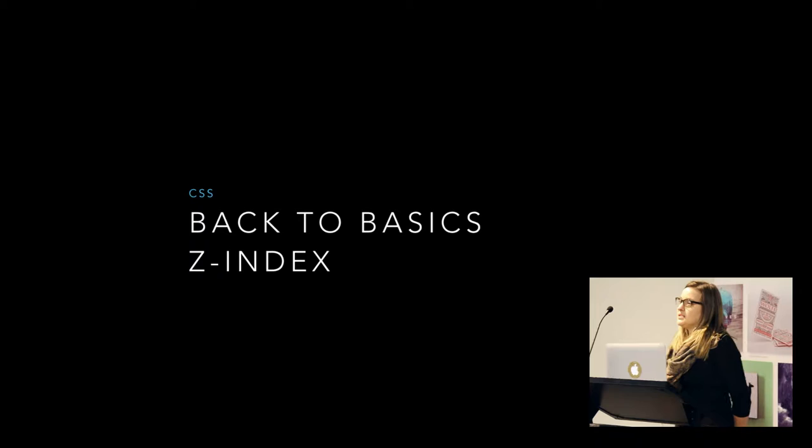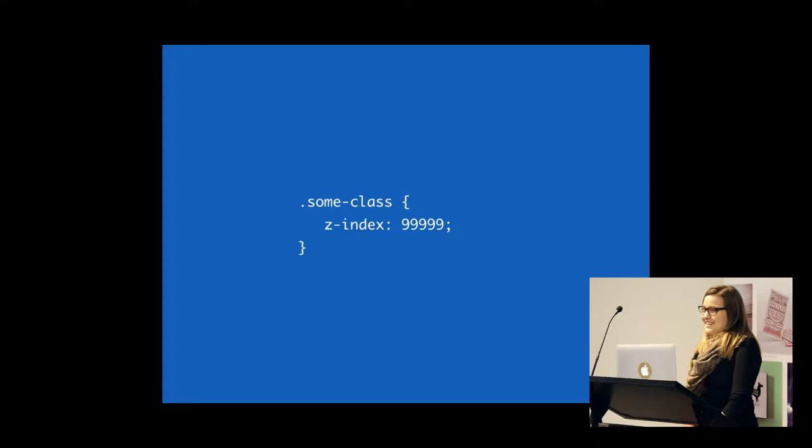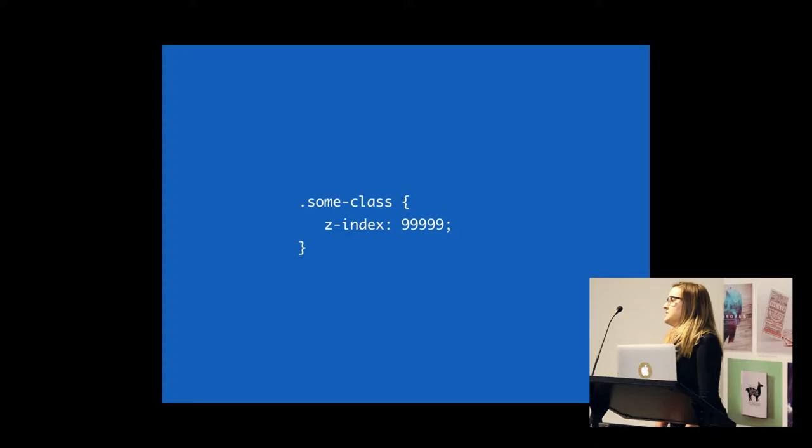Z-Index is a pretty common property for front-end developers to be working with. How many of you guys are familiar with Z-Index? In terms of working with Z-Index, how many people have done the classic 9999 and you're still confused because your Z-Index is not working? It should work, right? This is pretty much the largest number we can set it as. But unfortunately, Z-Index isn't really that simple.